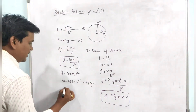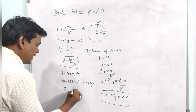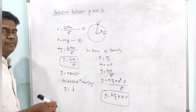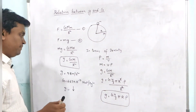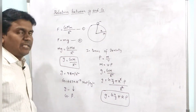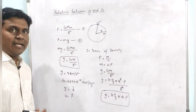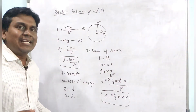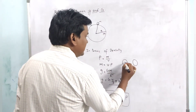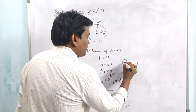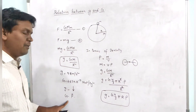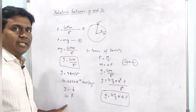Coming to the direction: the direction of small g is vertically downward towards the center. The direction of capital G is along the direction of force. If you take two masses, the force acts along the line joining their centers, so this is also a central force.